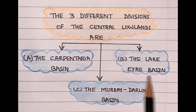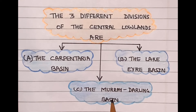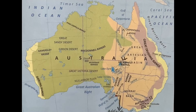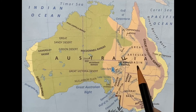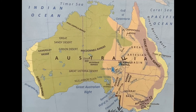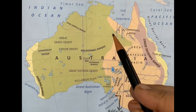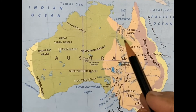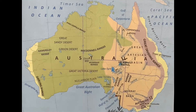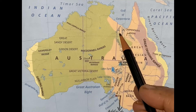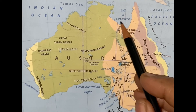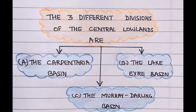Let's begin with A, the Carpentaria Basin, which occupies the northern part of the Central Lowlands. The important rivers of this region are the River Grigori, River Leschat, and River Flinders. You will notice that all these rivers flow northwards and drain into the Gulf of Carpentaria.